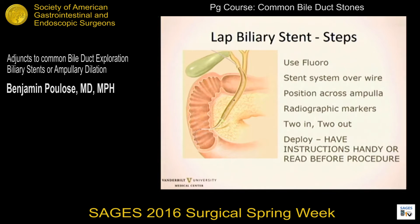This is a fluoroscopically based system. The stent is placed over the wire and positioned across the ampulla. There are four markers you'll see radiographically: two mark the distal aspect and two mark the proximal aspect of the stent. The easiest thing to remember is two in and two out—you want the two distal markers into the duodenum, the two proximal markers in the bile duct. I'd urge you, if you haven't deployed this before, to read the instructions for use beforehand. I got a call from a surgeon 100 miles away who was trying to do this mid-case and needed to be walked through it. Do this at least three or four times beforehand to get the sequence down.